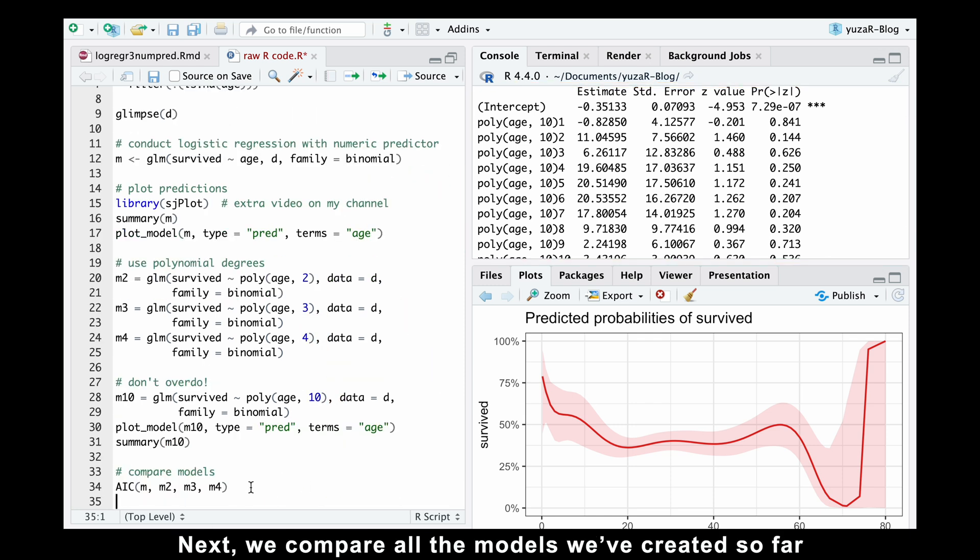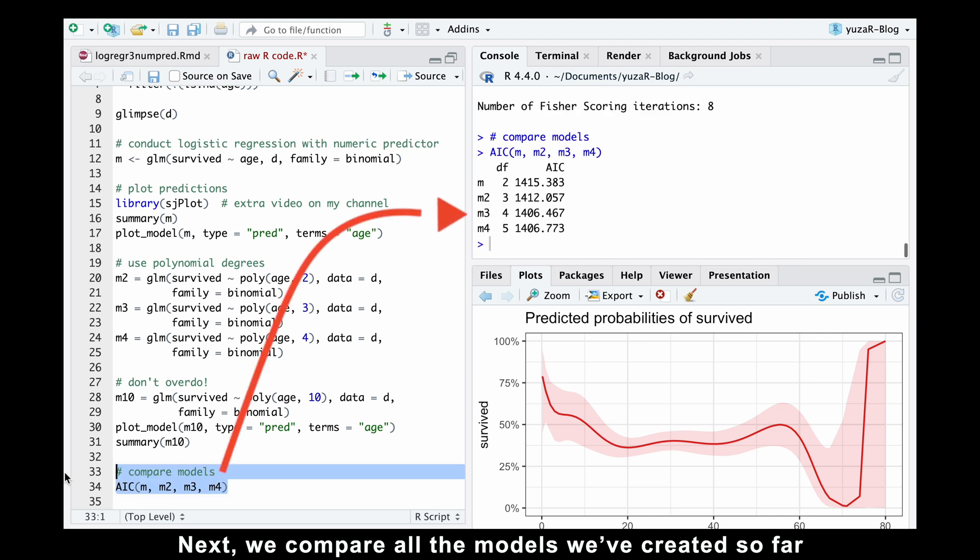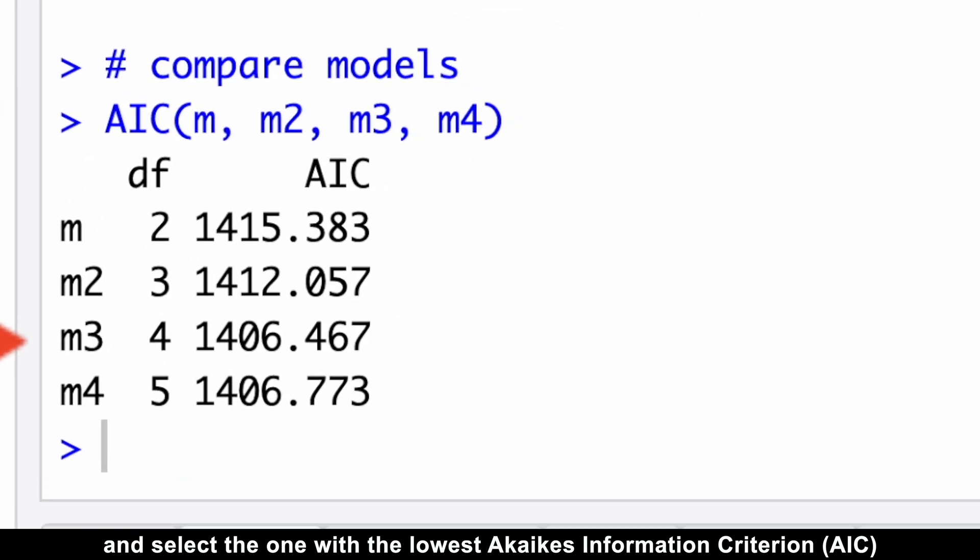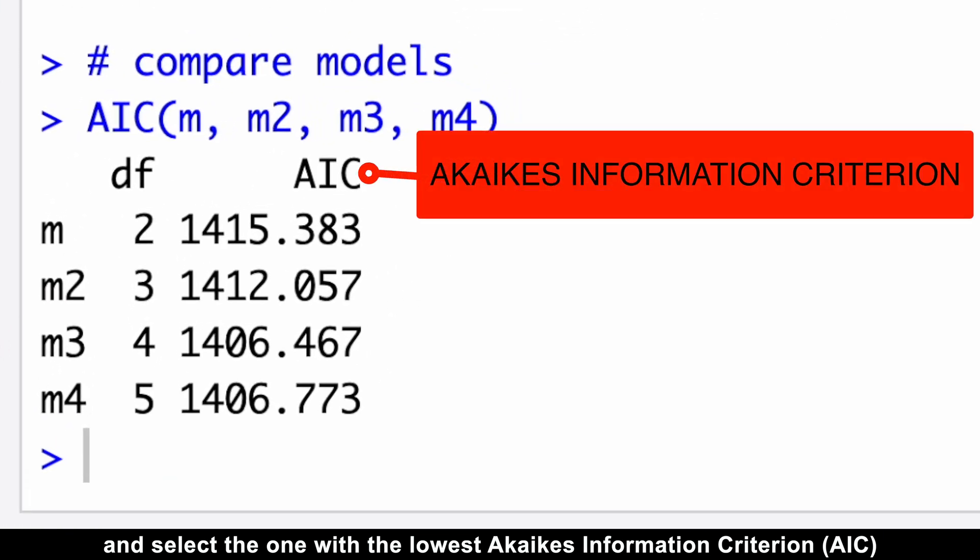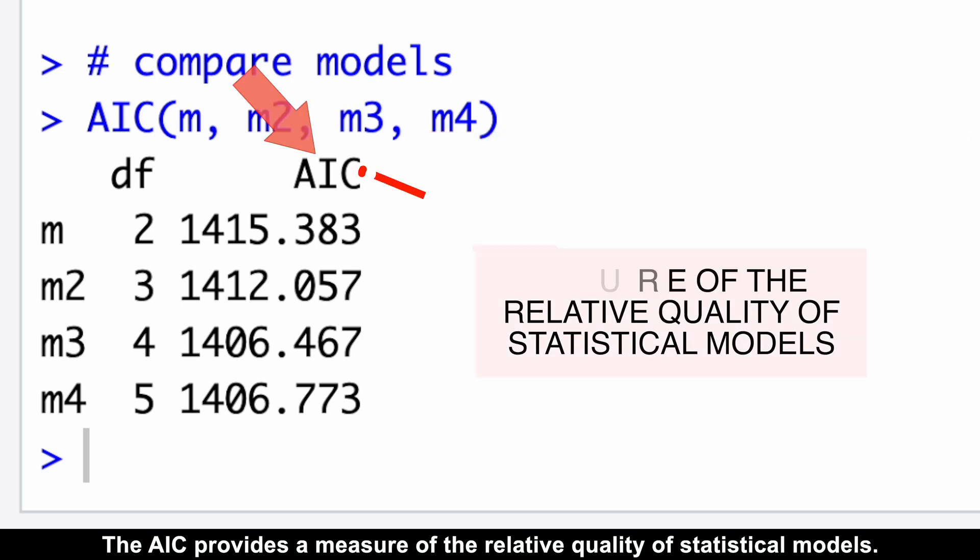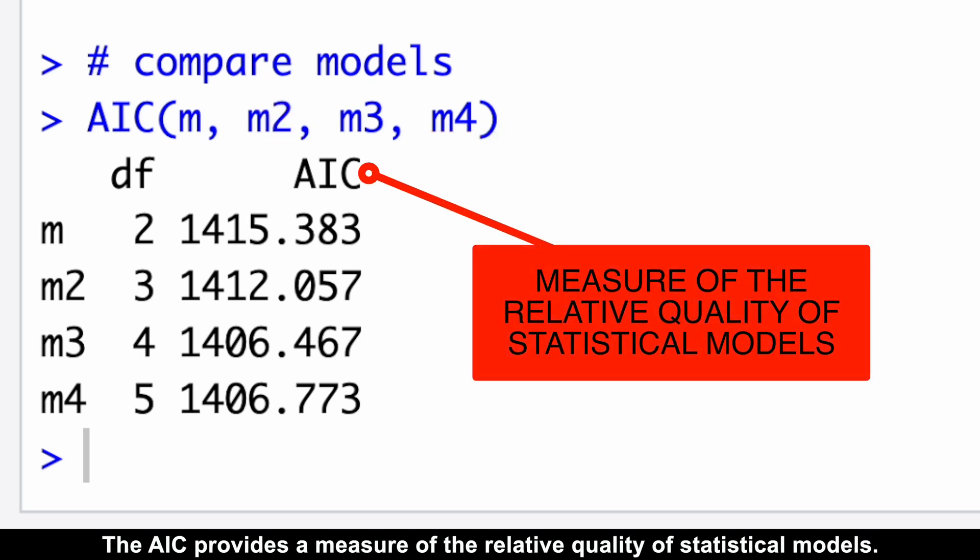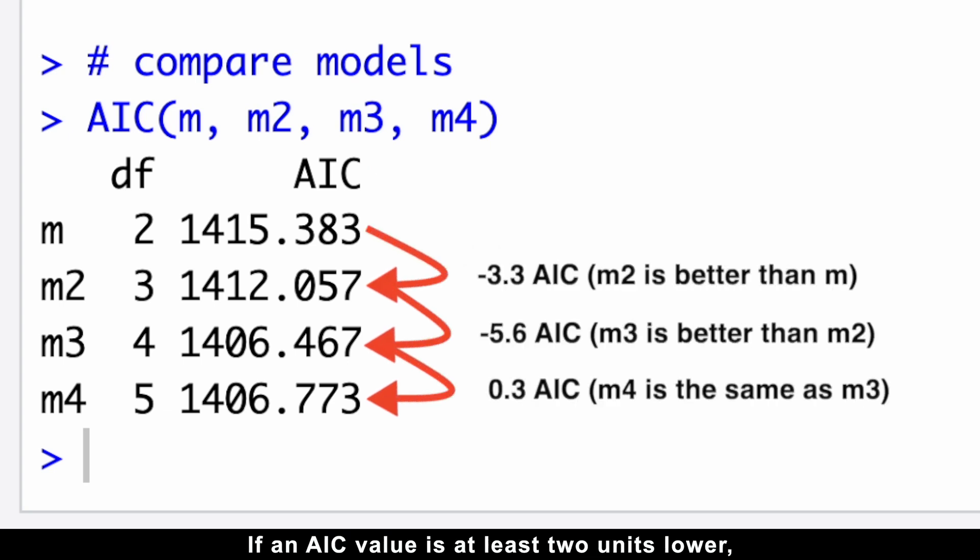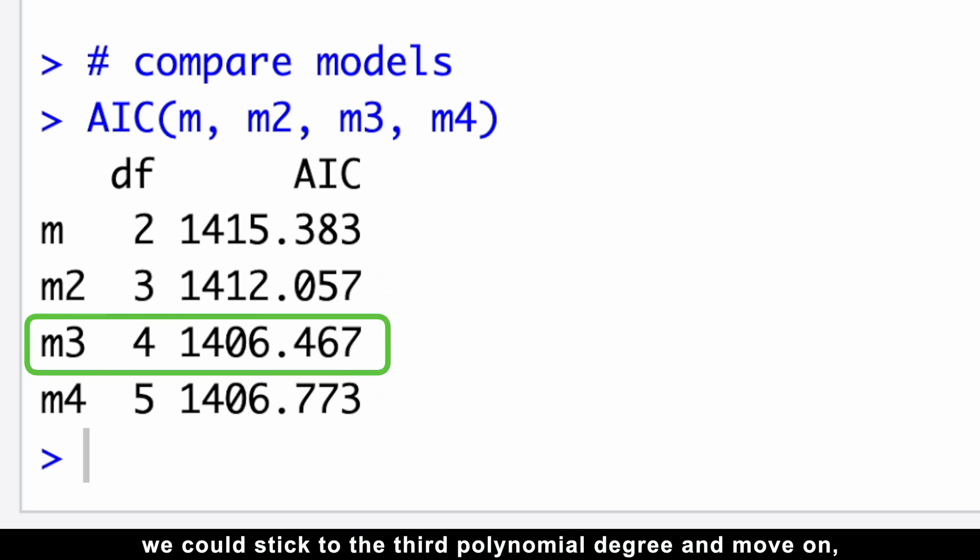Next, we compare all the models we've created so far and select the one with the lowest AIC information criterion, AIC. The AIC provides a measure of the relative quality of statistical models. If an AIC value is at least two units lower, it indicates a significantly better fit. Thus, in our example, we could stick to the third polynomial degree and move on.